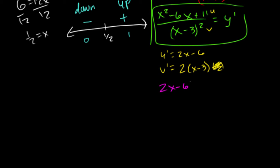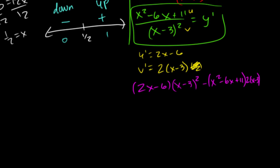And then, if we write the quotient rule for that, we're going to get 2x minus 6 times x minus 3 quantity squared minus x squared minus 6x plus 11, and then 2 times x minus 3. And that's all over x minus 3 squared squared, which is really just going to be a 4.